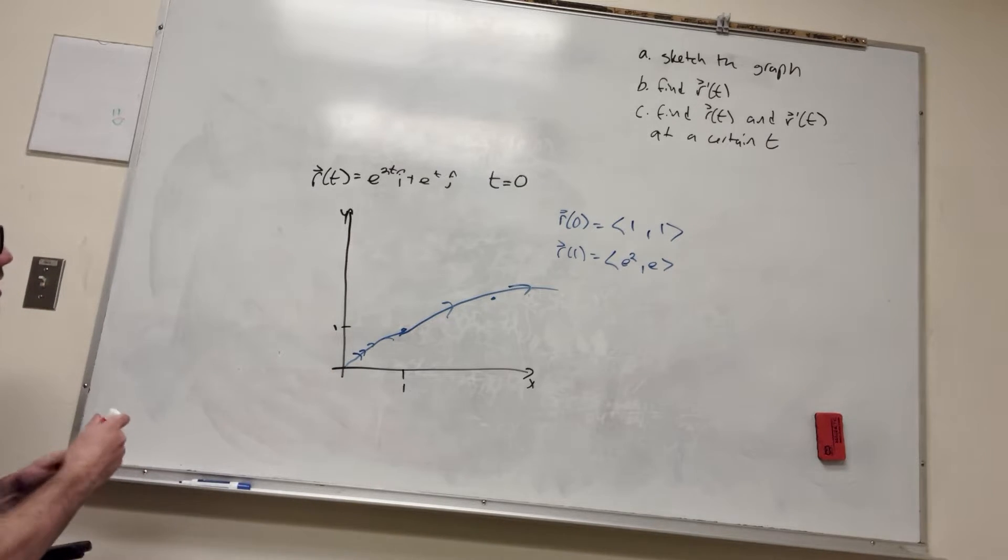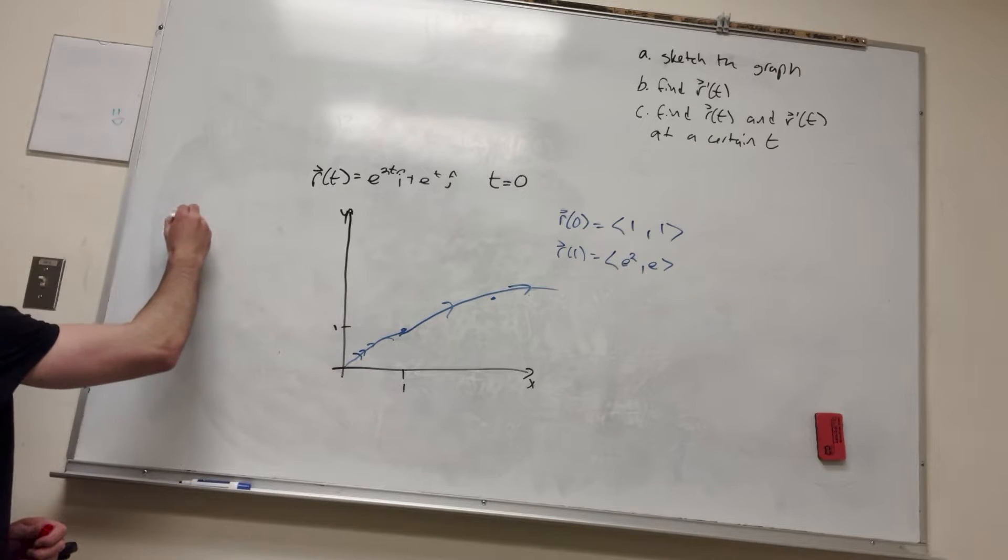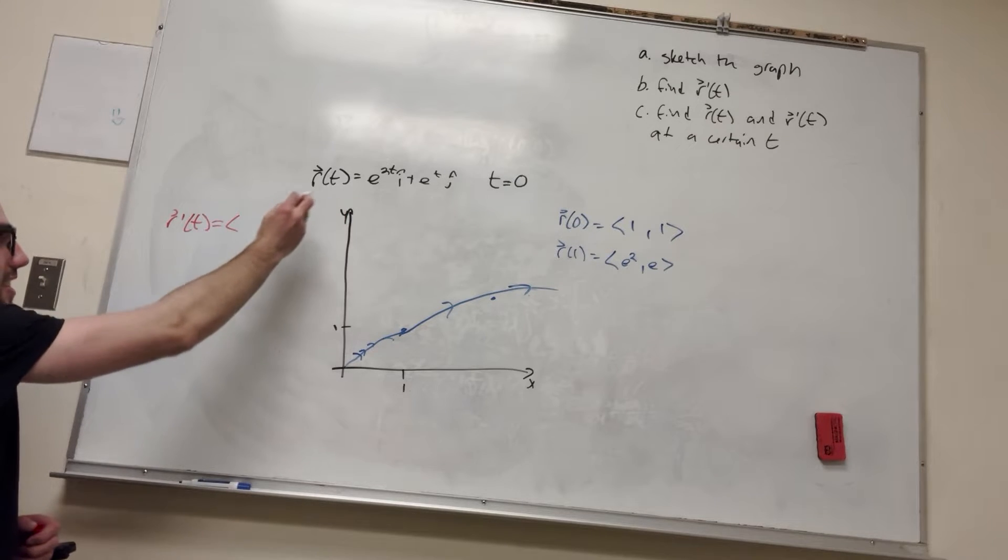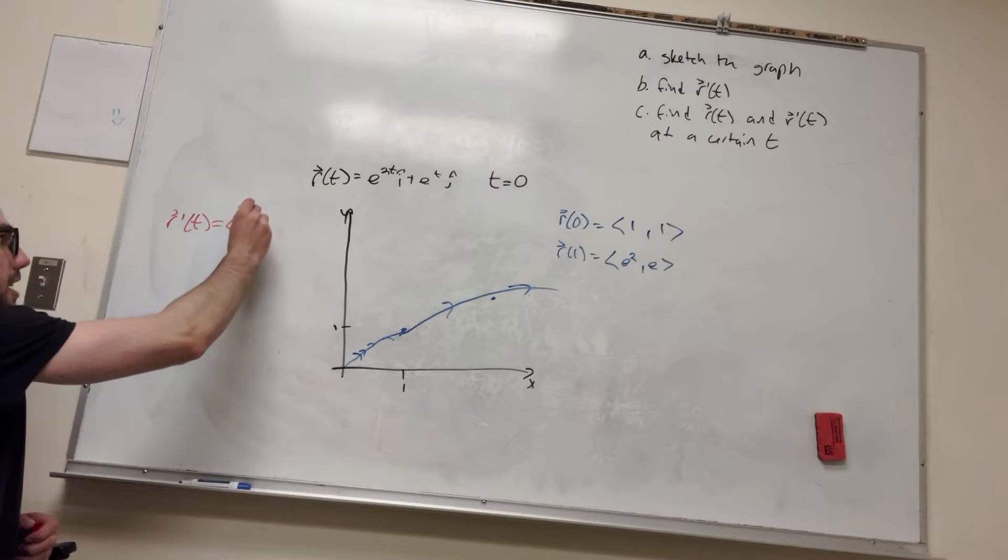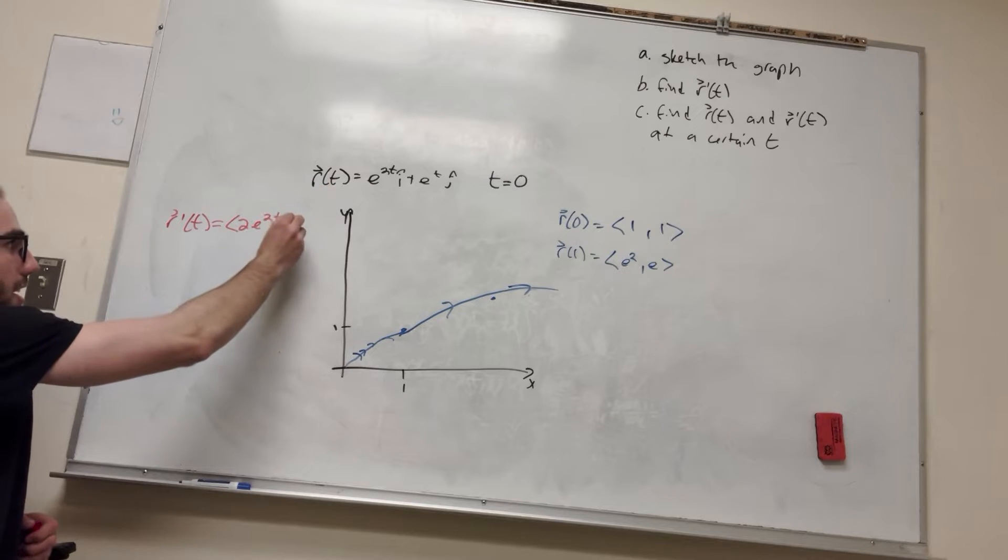So let's go over here. r prime of t is equal to... you just want to take the derivative with both sides. So this is going to be 2e to the 2t, and this is going to be e to the t.